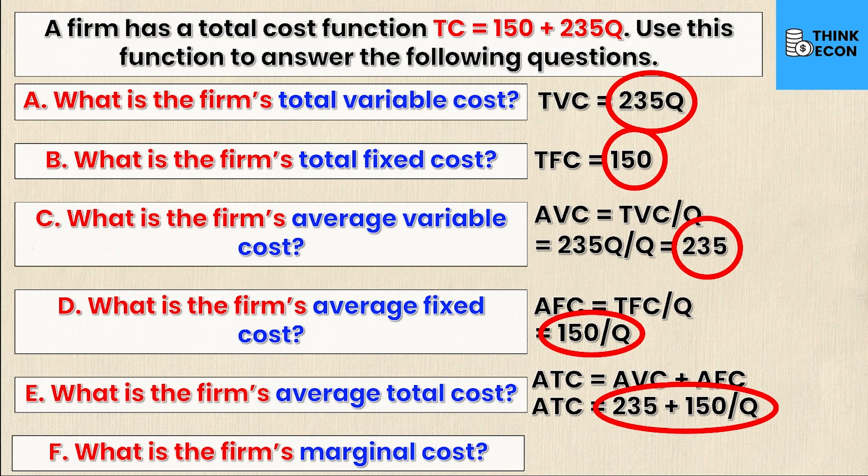That is, if you increase the quantity by one unit of output, then you will increase total cost by 235. So there you have it. That's how you use the total cost equation to find all of these associated cost values.